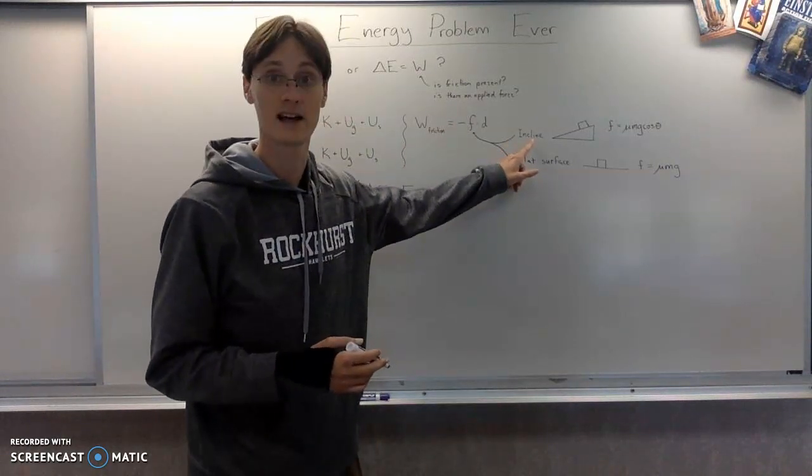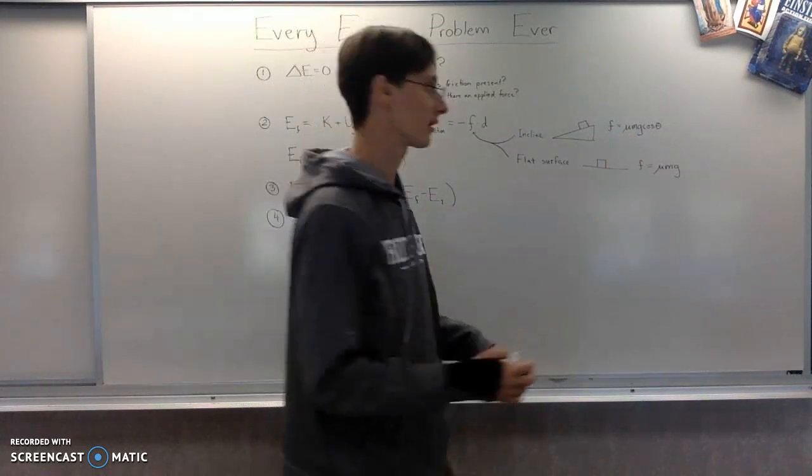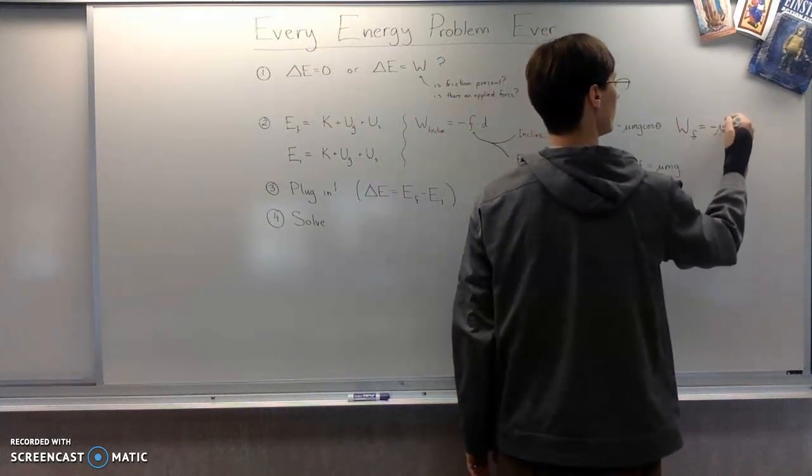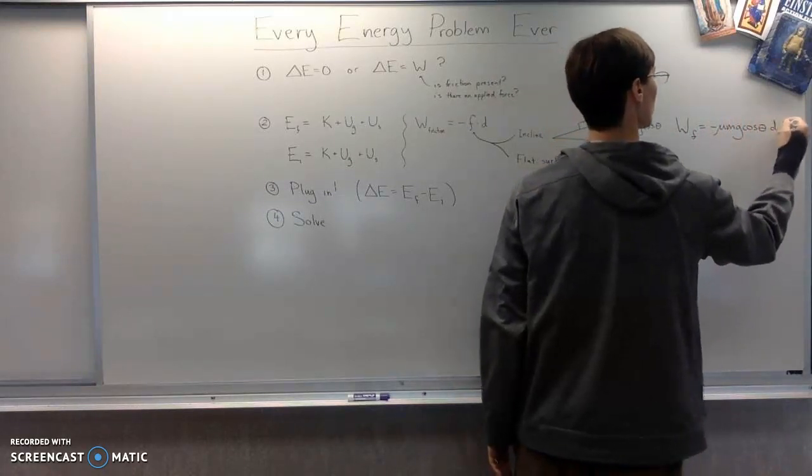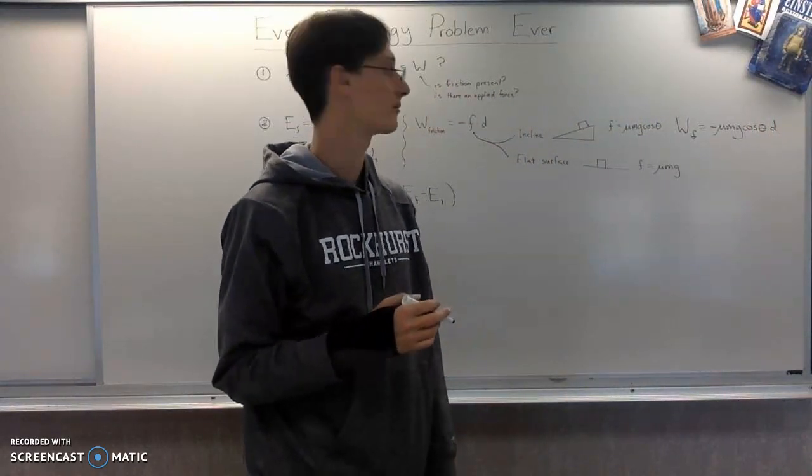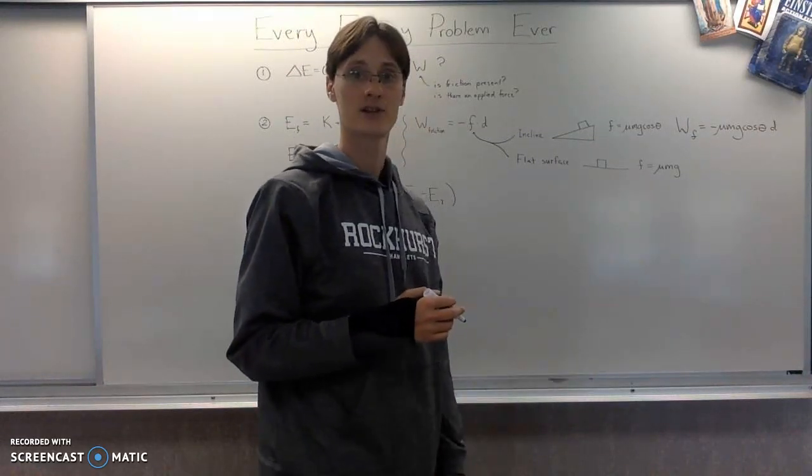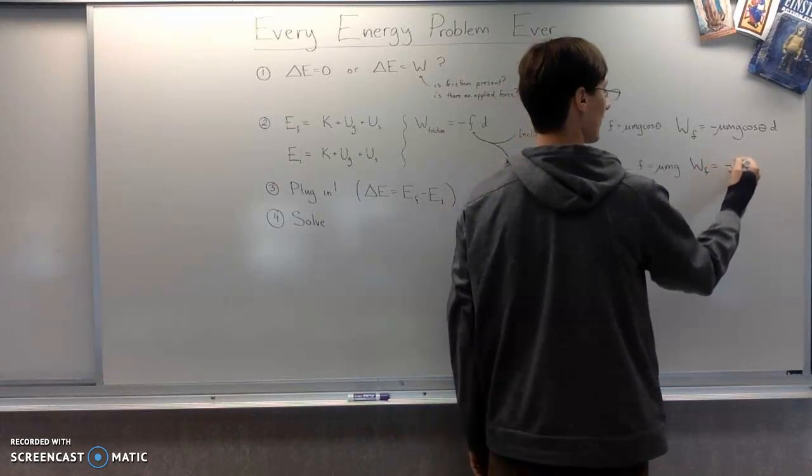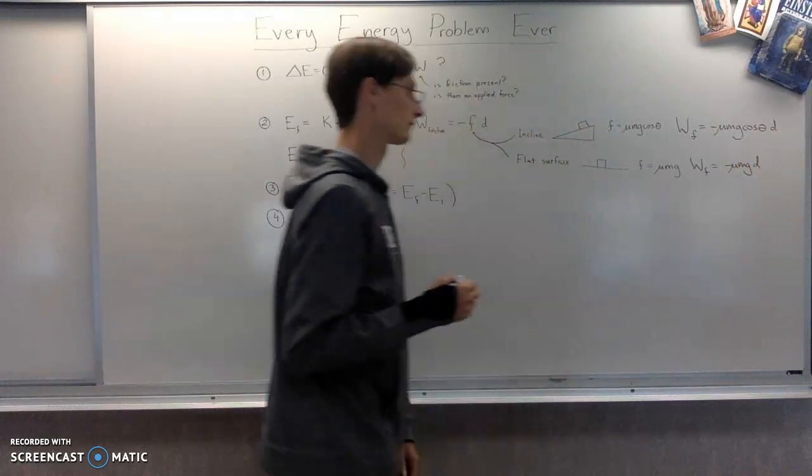If we're on an inclined plane, the friction force will be mu Mg cosine theta, which means that the work done by friction would be negative mu Mg cosine theta d. If you leave out the d, it's not work. It's just the force of friction. And then if you're on a flat surface, then the friction force is just going to be mu Mg, which makes the work in that case be negative mu Mg d.